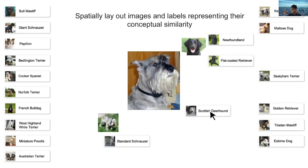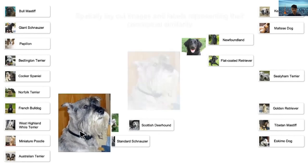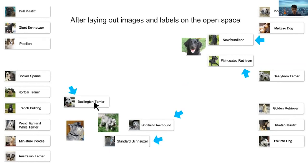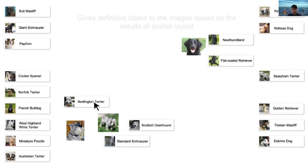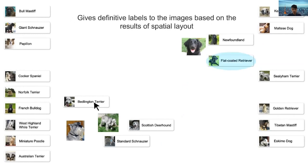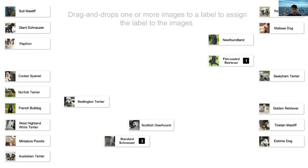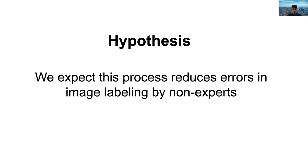During this process, the user can build domain knowledge by observing similarities and differences among the items. After laying out the images and labels, the user gives definitive labels to the images based on the result of the spatial layout by drag-and-dropping one or more images to a label. We expect this process to reduce error rates in image labeling by non-experts.